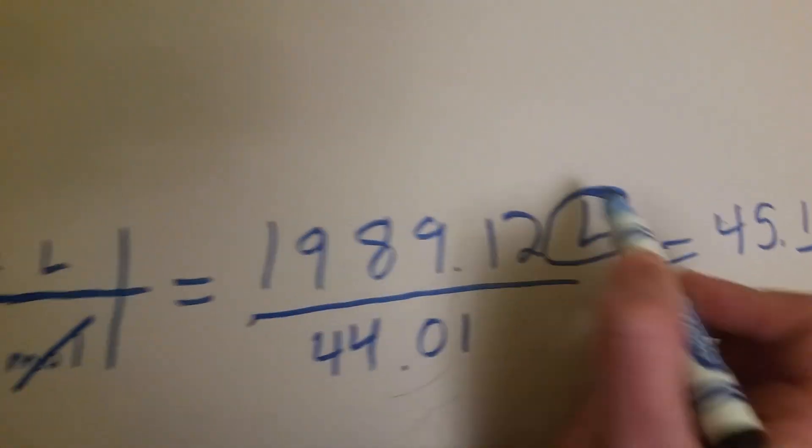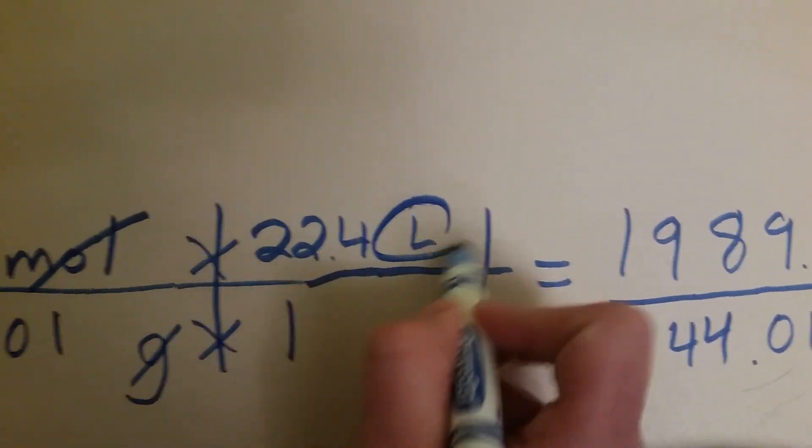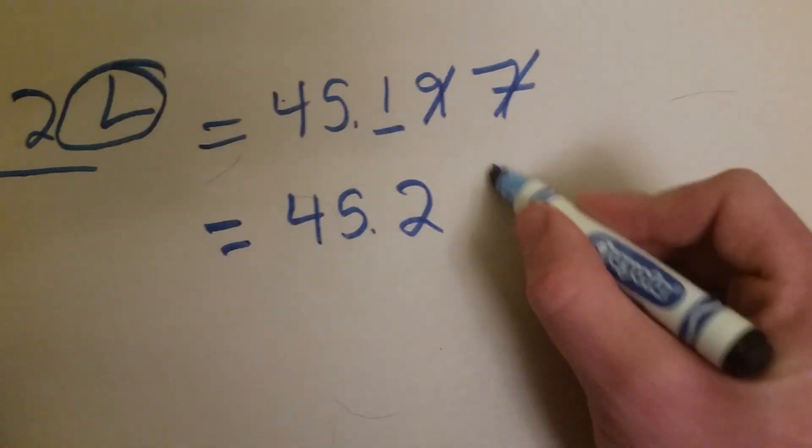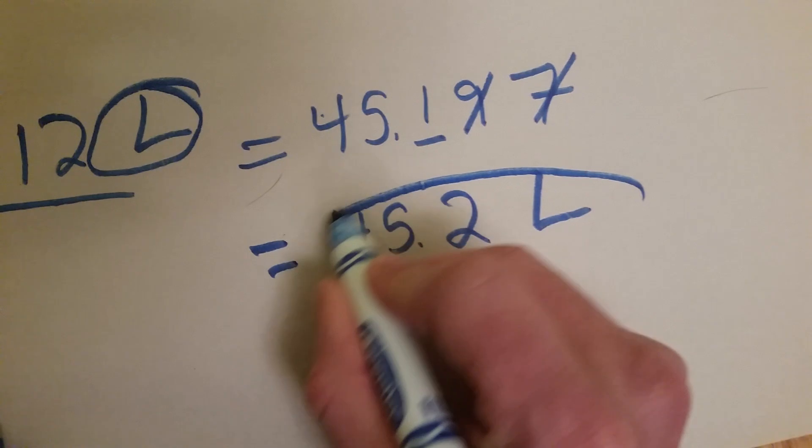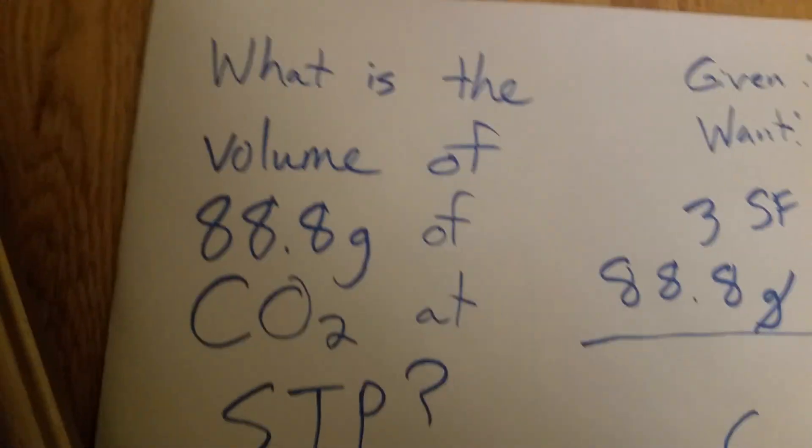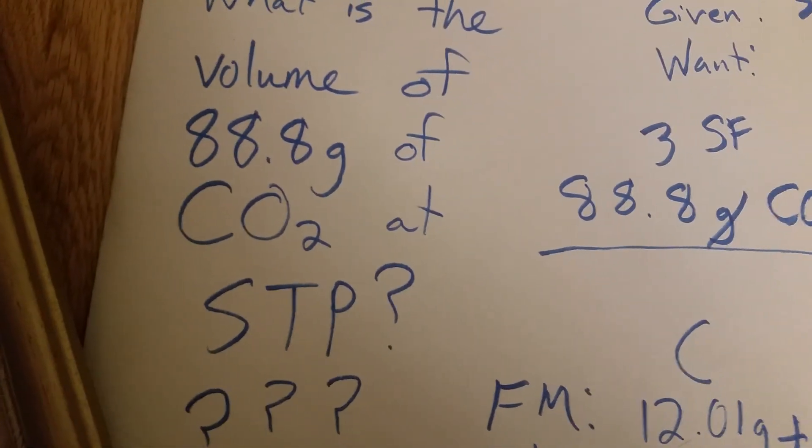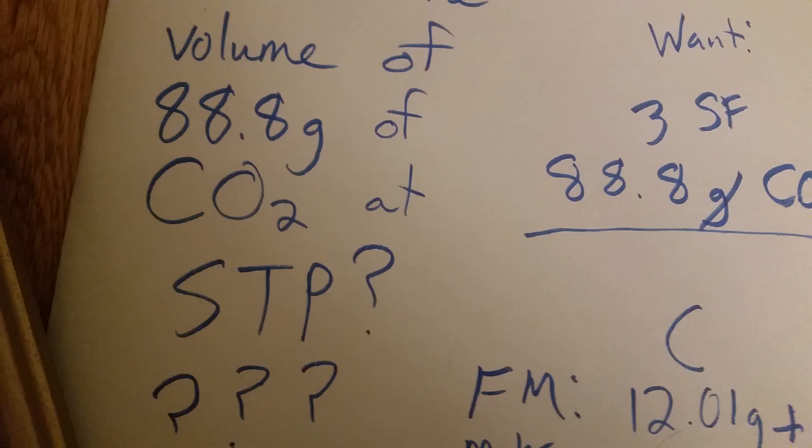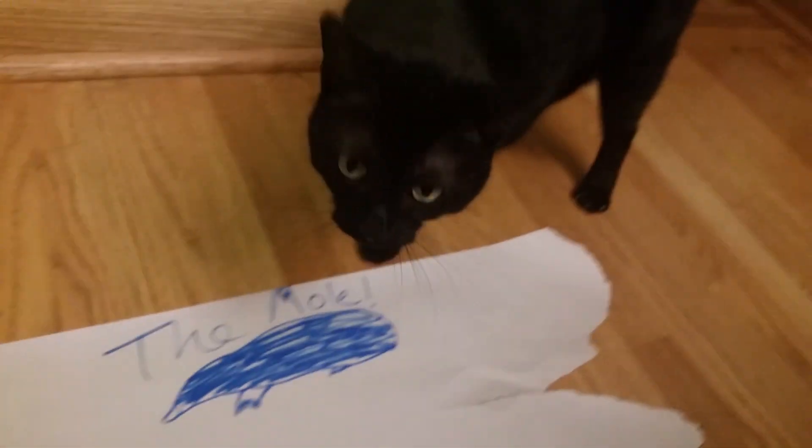So, this answer is 45.2. And what are our units again? Oh, yeah. We can circle them right here. We're in liters, my friend. And that is exactly how many liters are in 88.8 grams of CO2. Do you agree, Tilly? Yes, I do. Do you agree?